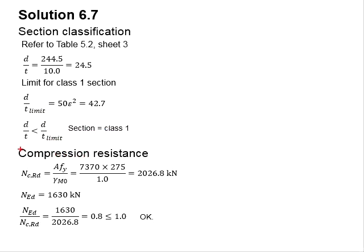Next, you check for the compression resistance without any reductions. It is in the function of the area times Fy divided by a factor of safety. Substitute the relevant value, you will get 2026.8 kN. Compared with the axial load, you found that the resistance is greater than the axial load. This makes the ratio equal to 0.8, which is less than 1.0. Therefore, the compression resistance of the member is acceptable.